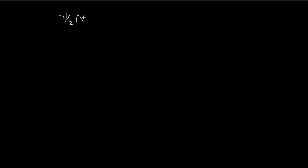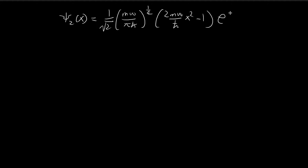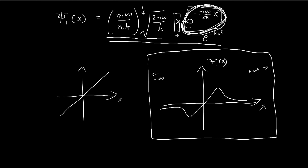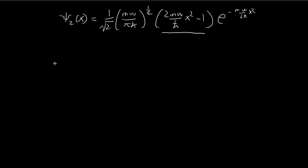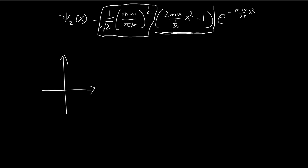We can apply the same reasoning to the second stationary state. In the last video, we proved that psi₂ is equal to this expression. For the first stationary state we considered an x function multiplied by the e term; this time we have a quadratic function. Again we have all these constants which we can ignore, and then a quadratic component multiplied by the e term that pushes the function toward zero as you tend toward positive and negative infinity. If we just focus on the quadratic function on its own, it looks like a parabola.